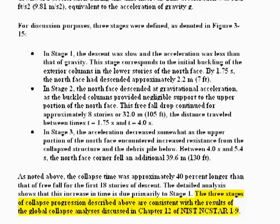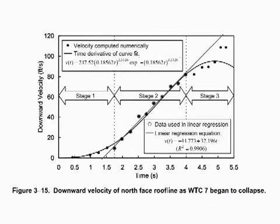Let's come back to NIST's acceptance of freefall. Here is their exact wording: 'The three stages of collapse progression described above are consistent with the results of the global collapse analysis discussed in Chapter 12 of NIST NCSTAR 1-9.' In other words, they're giving the appearance of claiming freefall is okay, but actually it's the 5.4-second duration of their three-stage analysis that matches their model. But the 5.4 seconds depends on an artificially early start time which has no valid observational basis. Without the 5.4-second fig leaf, they are left with freefall and nothing more.